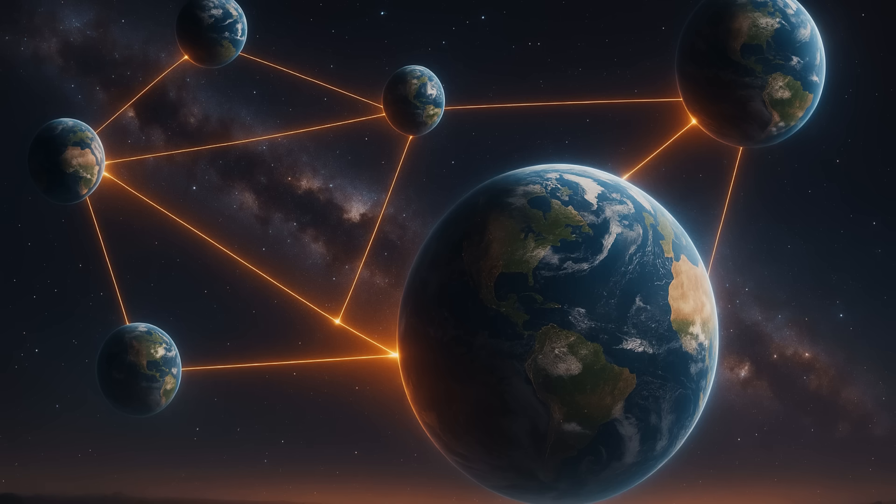The two astrobiological Copernican limits are that intelligent life forms in less than 5 billion years, or after about 5 billion years, similar to on Earth where a communicating civilization formed after 4.5 billion years.